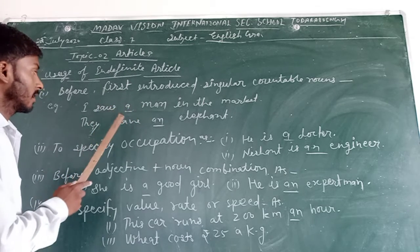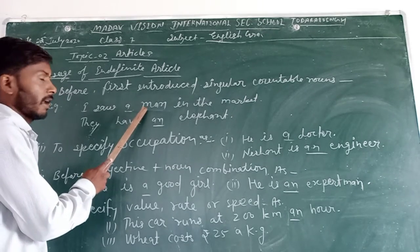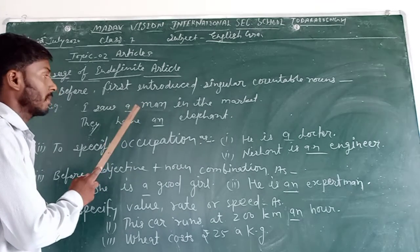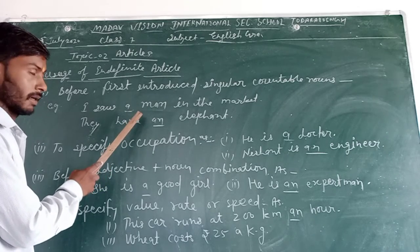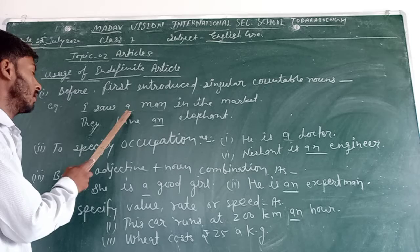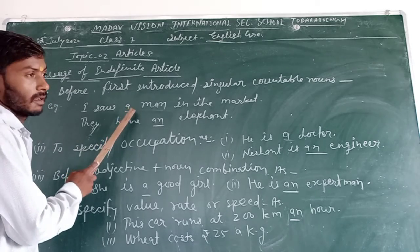Let's see, first letter of this noun is M. Man, M, man. So we will use article A.